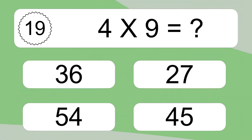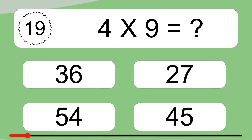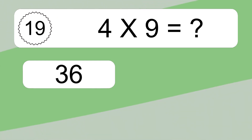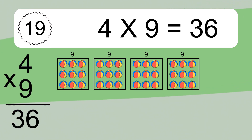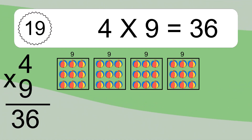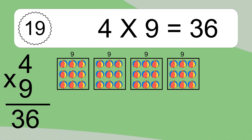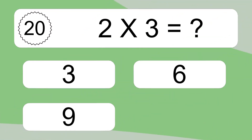4 times 9 equals what? 4 times 9 equals 36. We have 4 boxes, and each box has 9 colorful balls inside. If you count all the balls in all the boxes together, you will have 4 times 9 balls. This equals 36 balls.